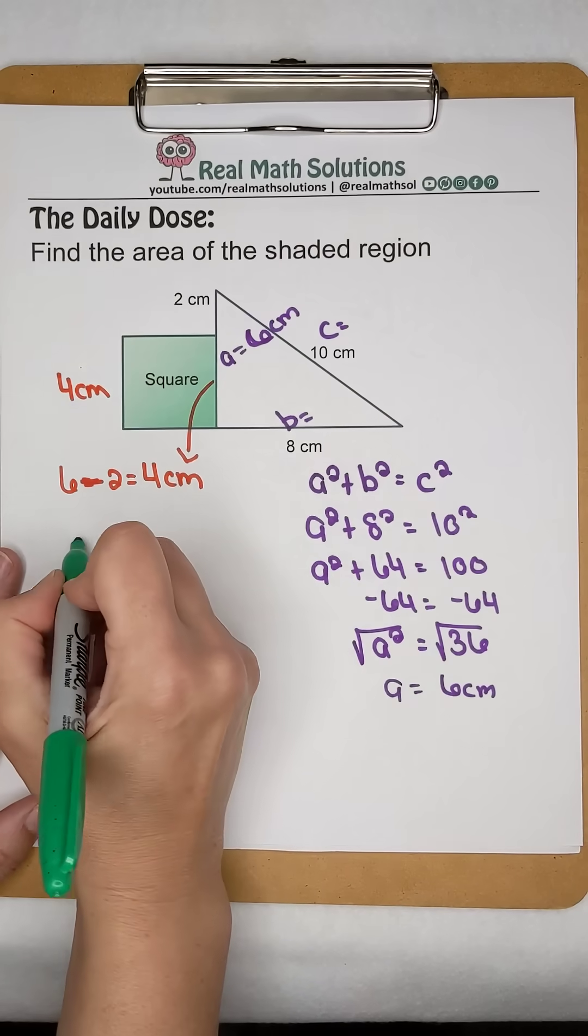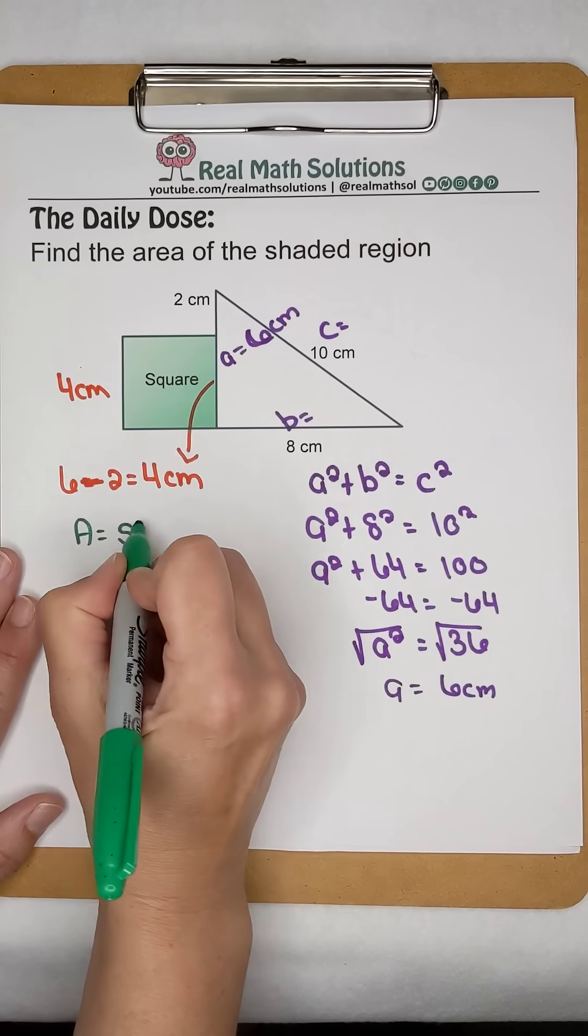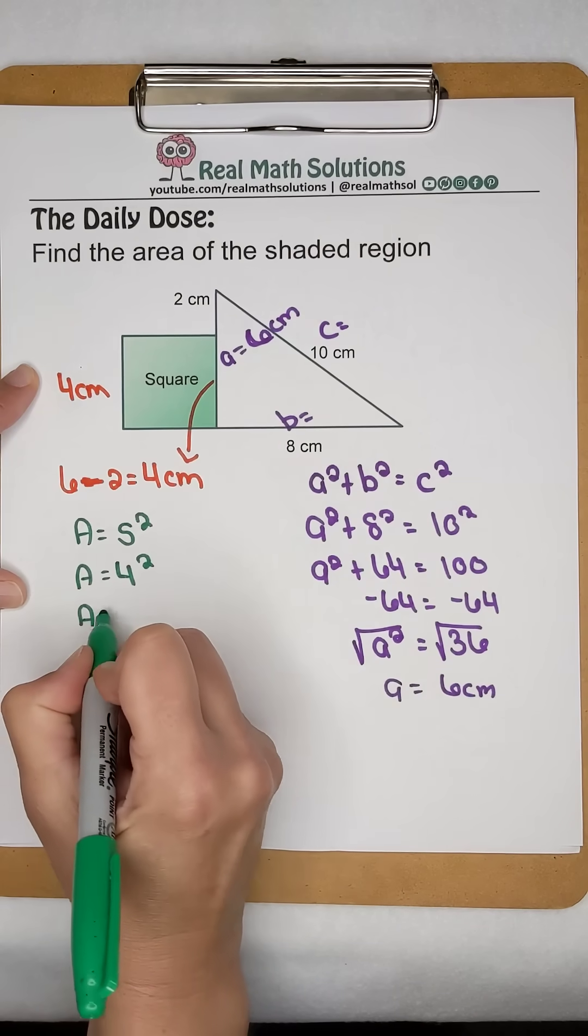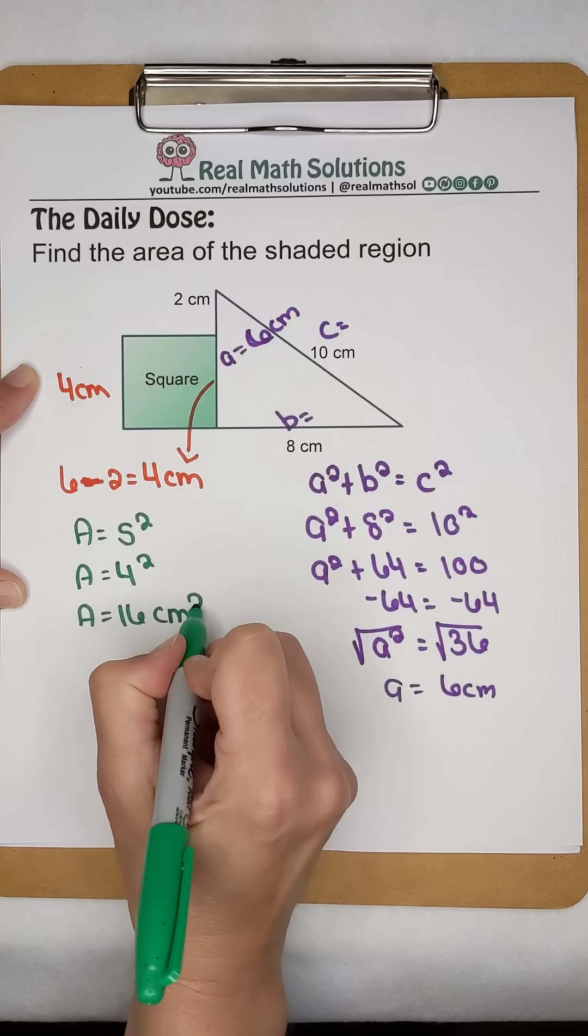Now we can find our area of a square. Area of a square is side squared. Well we just found that that is 4 centimeters, so area is going to be 4². Or the area of the shaded part of the square is going to come out to be 16 square centimeters.